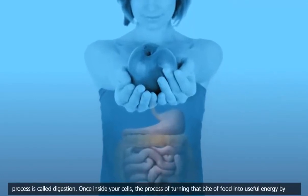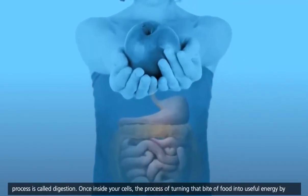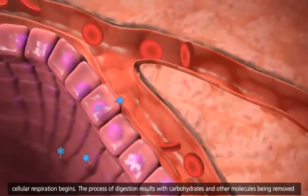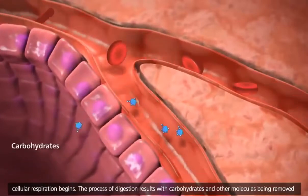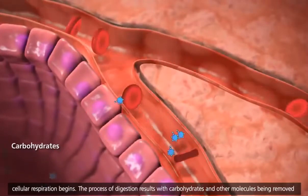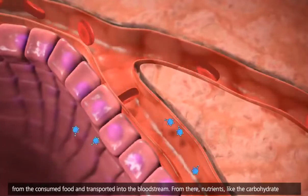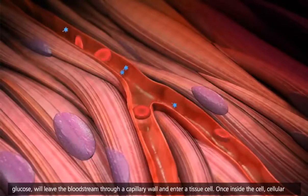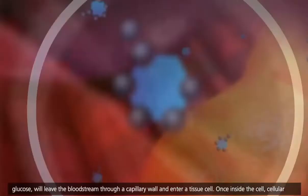Once inside your cells, the process of turning that bite of food into useful energy by cellular respiration begins. The process of digestion results with carbohydrates and other molecules being removed from the consumed food and transported into the bloodstream. From there, nutrients like the carbohydrate glucose will leave the bloodstream through a capillary wall and enter a tissue cell.